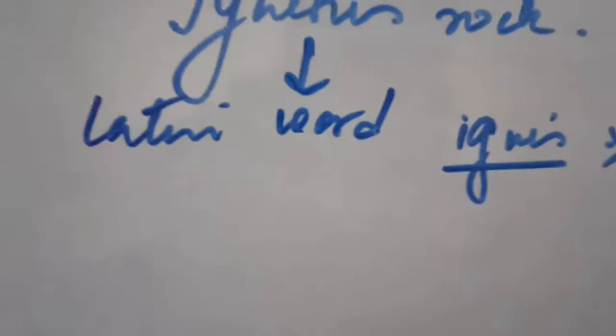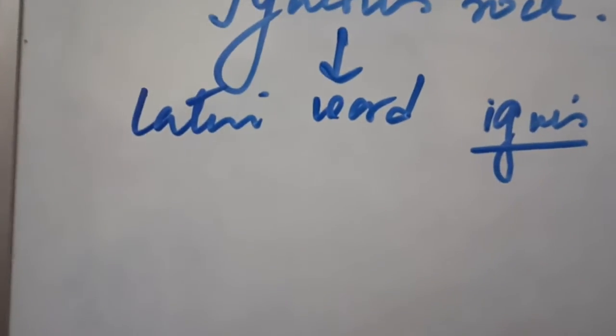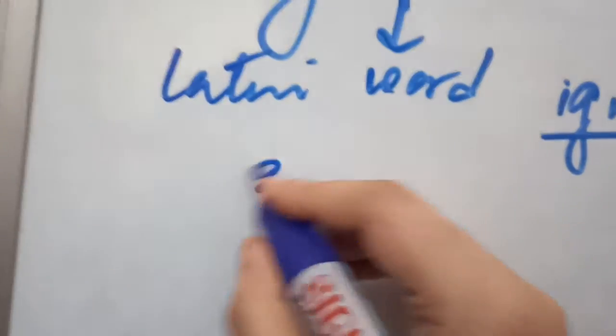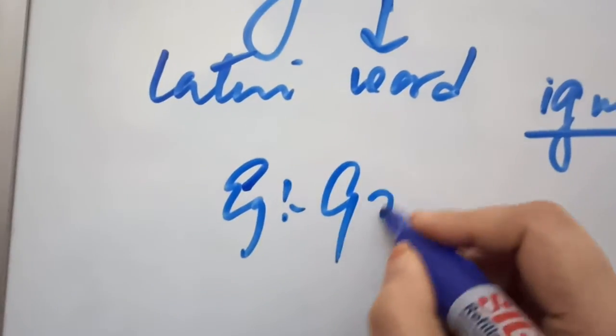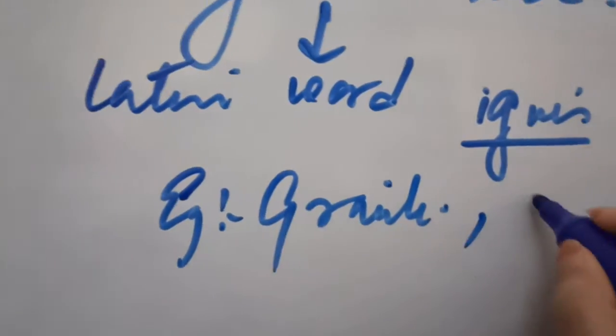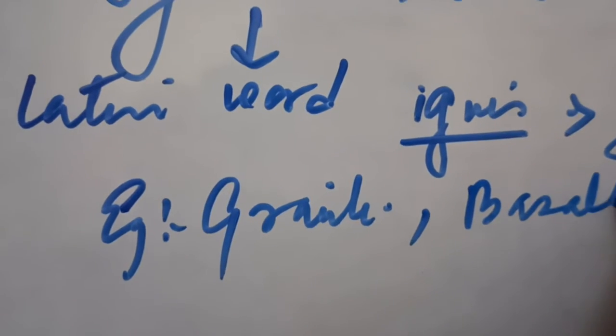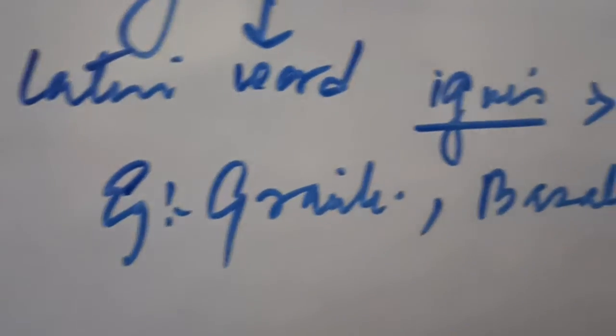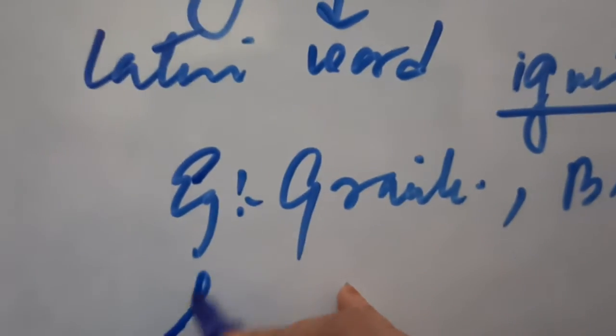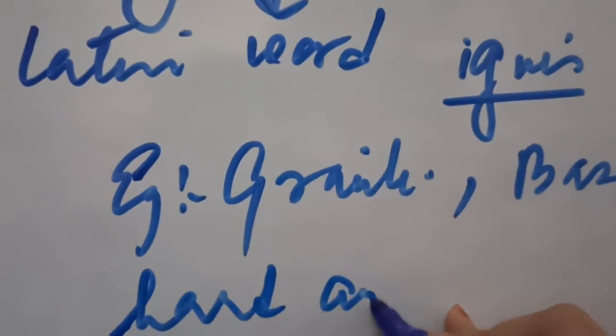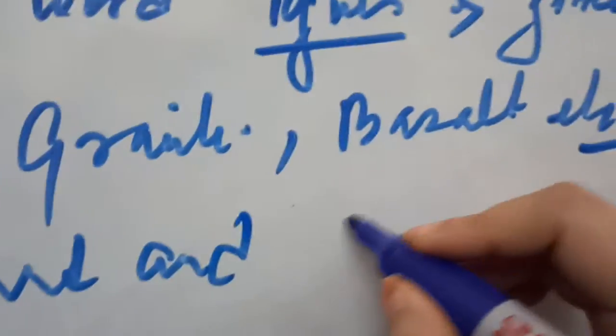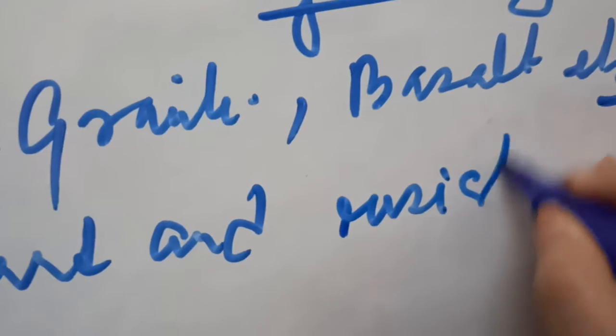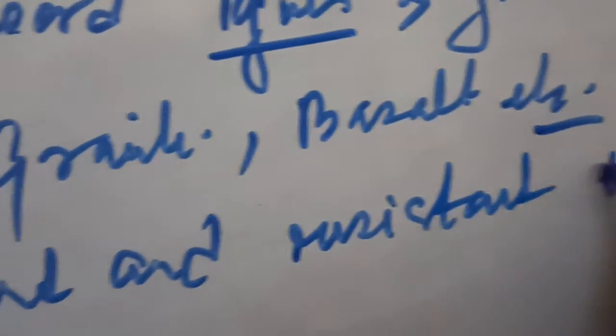Examples of some igneous rocks are like granite, then we have basalt, etc. These rocks are very hard and resistant to erosion.